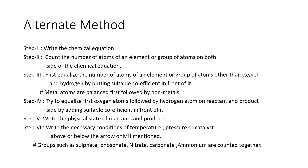In step three, equalize all atoms of the element or group of atoms other than hydrogen and oxygen — hydrogen and oxygen are balanced later. Among the remaining elements, metal atoms must be balanced first, followed by non-metals. In step four, balance oxygen first, then move on to hydrogen. In most cases, when oxygen is balanced, hydrogen will be automatically balanced.